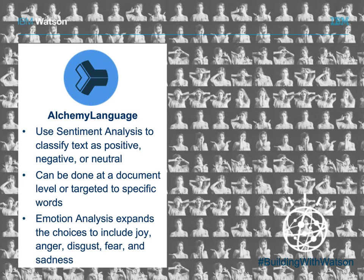We can help make sure that when you're searching for something related to your company or brand, rather than just returning all results with a similar name, we ensure it's actually mentioning your brand as a company. A really good example is Apple — if you're searching for Apple meaning Apple Computer, a generic search might also return results about the fruit. But using this technology, we can recognize when Apple is mentioned as a company versus a fruit, so your analysis only looks at the relevant results.